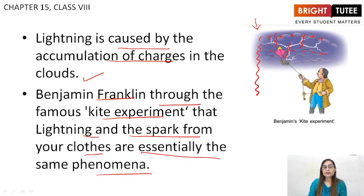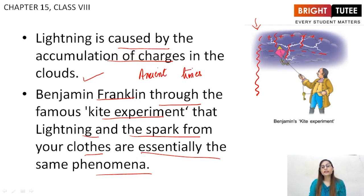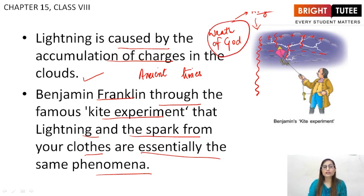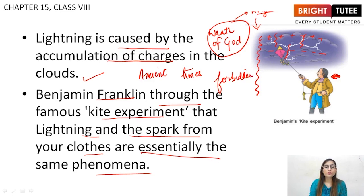In ancient times, people used to believe that lightning is the wrath of god — wrath meaning anger. People referred to lightning as god's anger, not as a natural phenomena. But Benjamin Franklin, a scientist, did not believe this. During lightning it was forbidden to go outside, but he had to prove everyone wrong, so he constructed a kite.